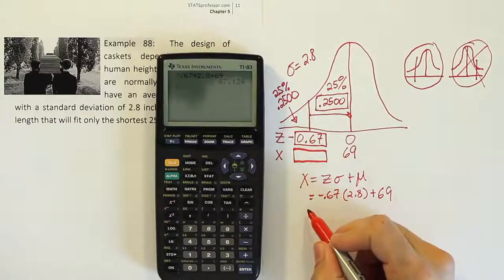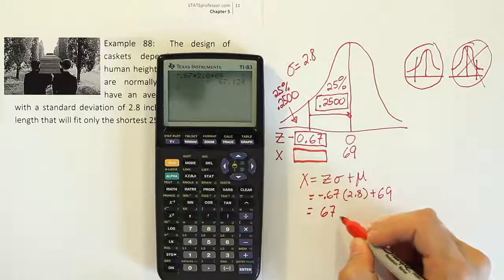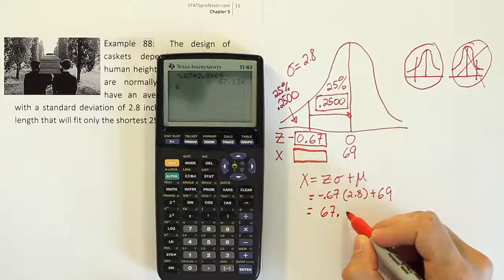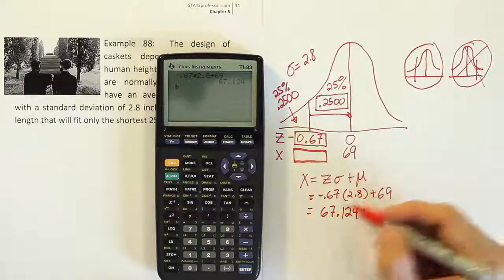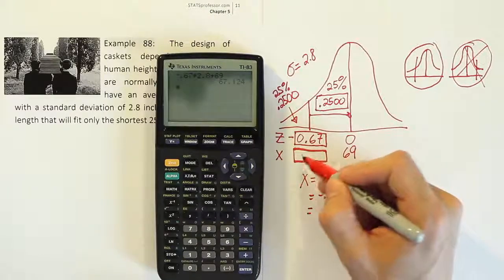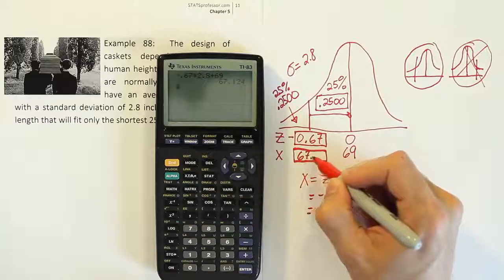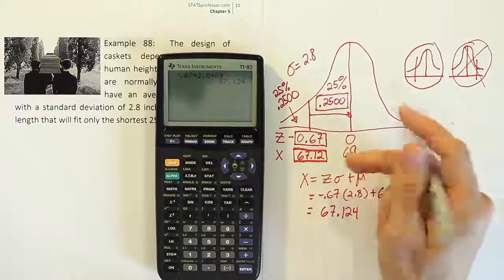Either way, your answer, remember, should be less than the mean because it's on the left-hand side. And as a quick check, we see that that is in fact correct. The answer is 67.124 inches. Or if you want to round off to just whole numbers, it'd be 67 inches. That's about 5'7". So let's write it as 67.12 inches.